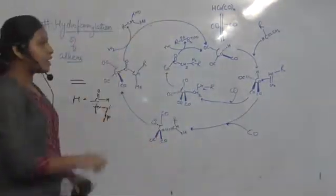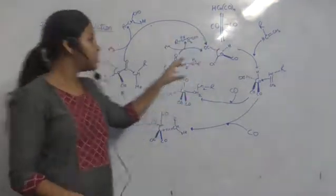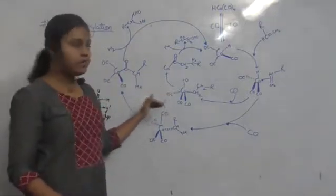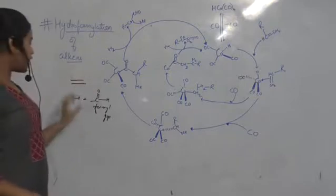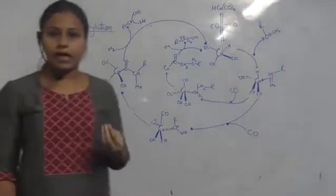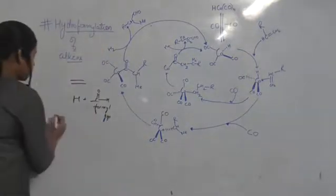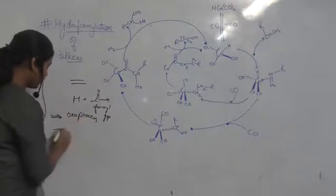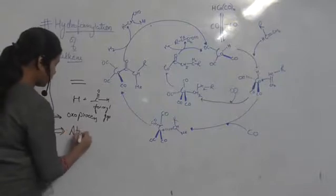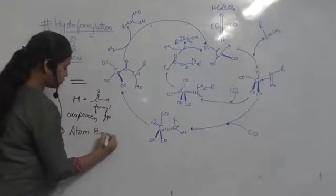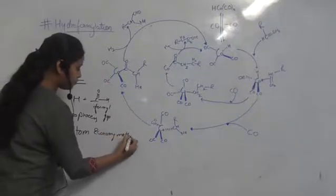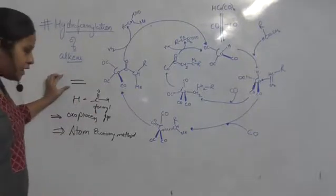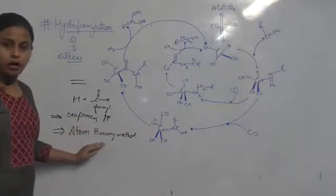In this reaction, the catalyst used is the cobalt catalyst Co2(CO)8, which is used to catalyze the reaction. The hydroformylation reaction is the addition of hydrogen and formyl group over alkene. This process is also known as the oxo process, as well as the atom economy process.